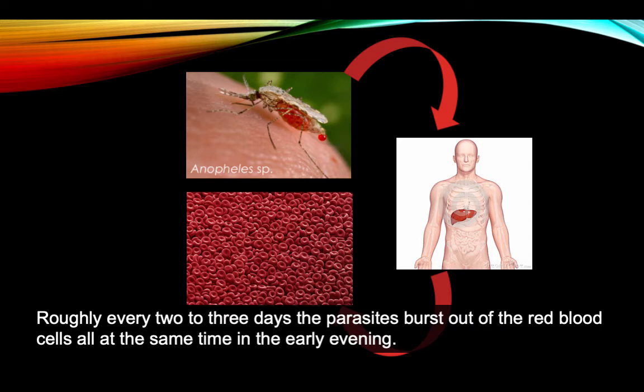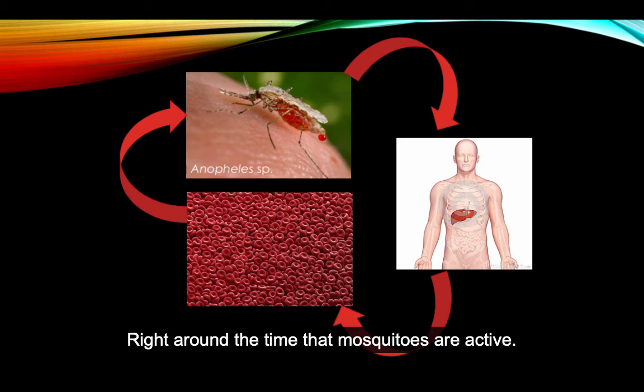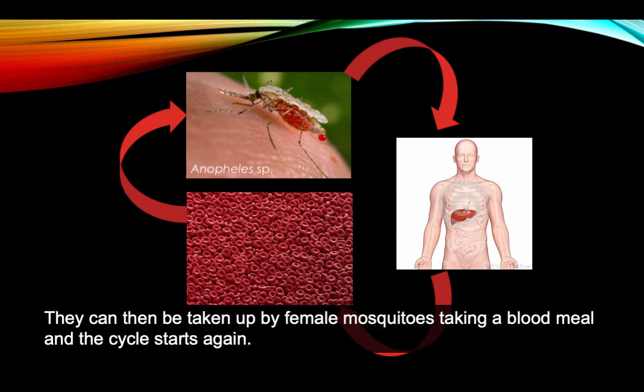Roughly every two to three days, the parasites burst out of the red blood cells all at the same time in the early evening, right around the time that mosquitoes are active. They can then be taken up by female mosquitoes taking a blood meal, and the cycle starts again.